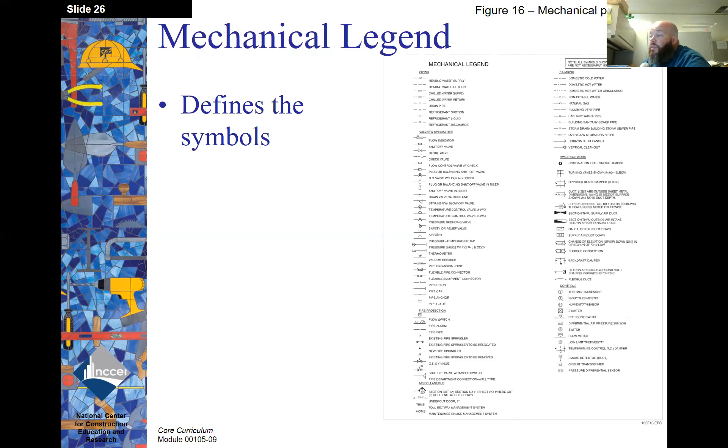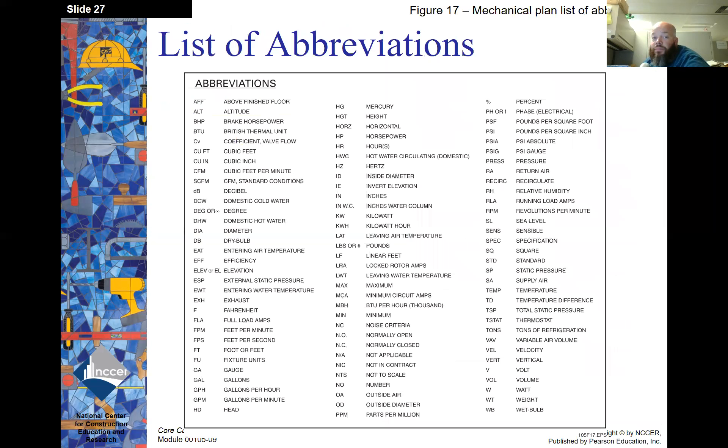Mechanical legend. This defines the symbols. Again, just like the other legend, it's going to tell you what the different symbols mean that you see on your drawing. List of abbreviations, just like the legend. At times, things will be abbreviated to save space on the drawing. This list is also included.